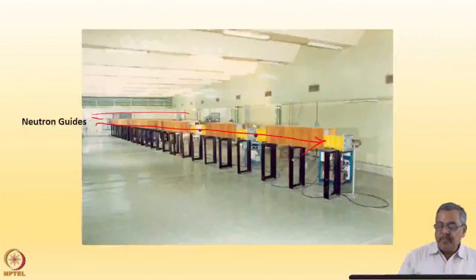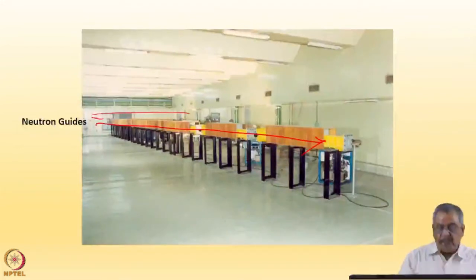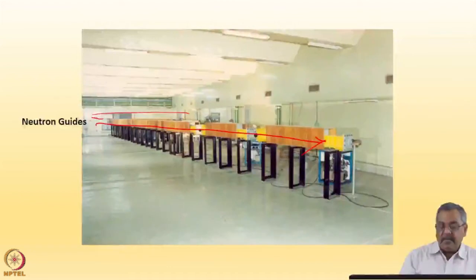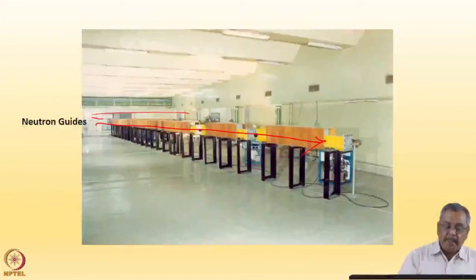Neutron guides are neutron transporting devices, but they are static devices — there are no moving parts in them. They work using the principle of total external reflection of neutrons. This is necessary because it is difficult to place all the experimental facilities in the reactor hall, so you need more space.